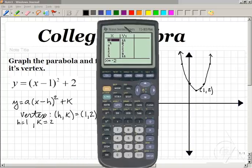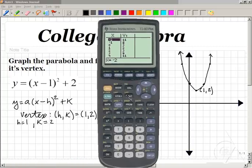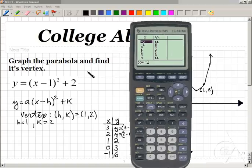So, we've been able to double-check and verify that our graph of our parabola with vertex 1, 2 is indeed the correct information for our problem graph the parabola and find its vertex.